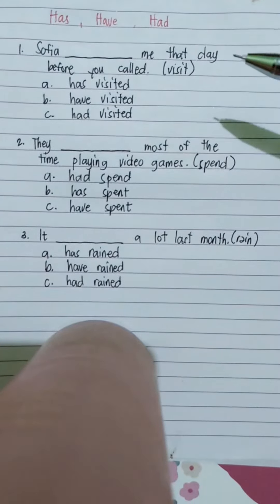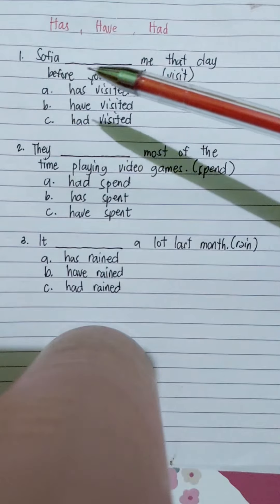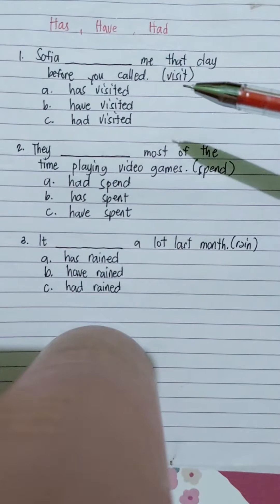Hi there, this is the video that you're waiting for. So here we go: has, have, had. The first question is Sophia blank me that day before you called. So the verb here is visit. What do you think is the correct answer?